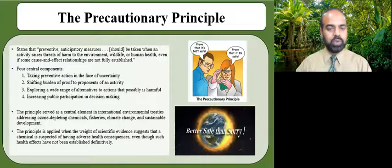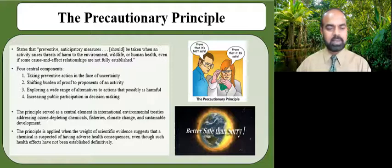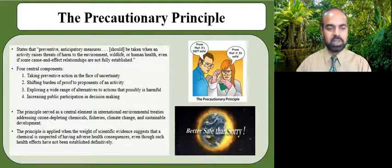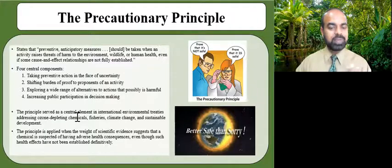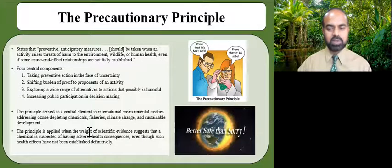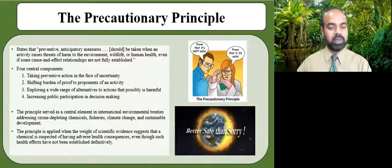Policies developed in the European Union follow the precautionary principle and advocate that preventive action be taken to reduce risk from potential environmental hazards. Although the principle has its roots in German environmental policy, over the past three to four decades it has served as a central element in international environmental treaties addressing ozone-depleting chemicals, fisheries, climate change, and sustainable development. The principle is applied when the weight of scientific evidence suggests that a chemical is suspected of having adverse health consequences, even though such health effects have not been definitively established.